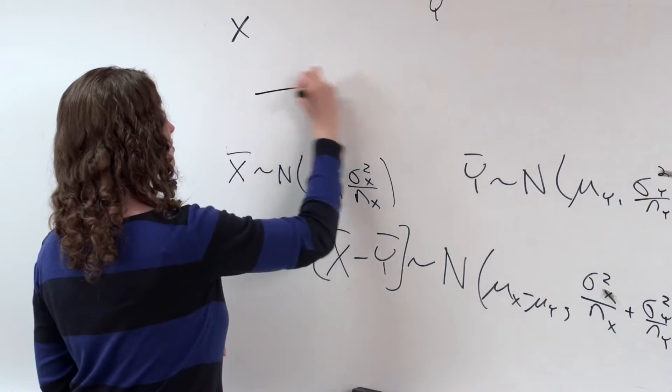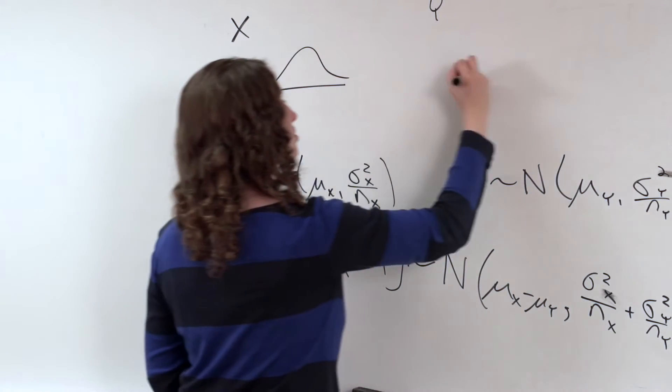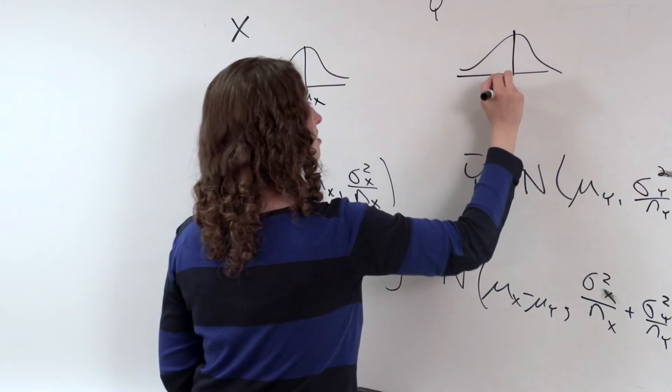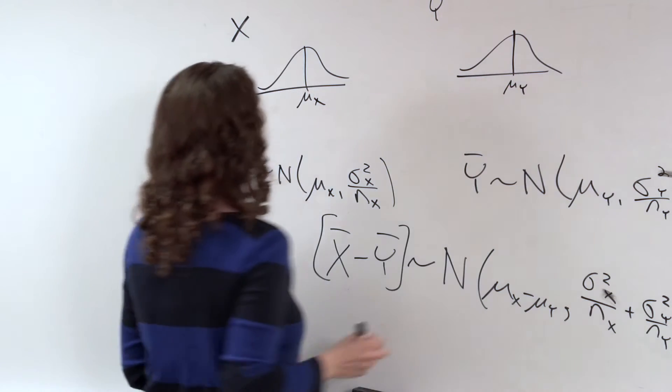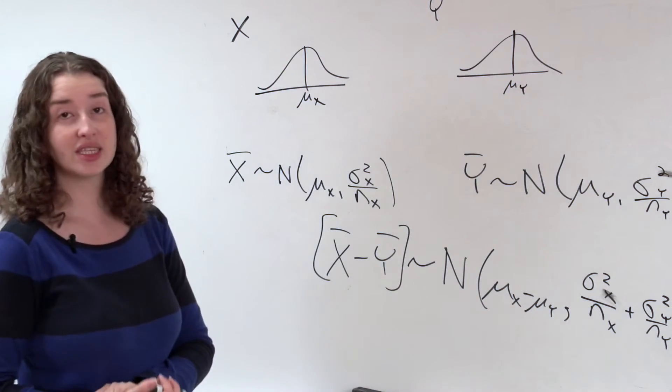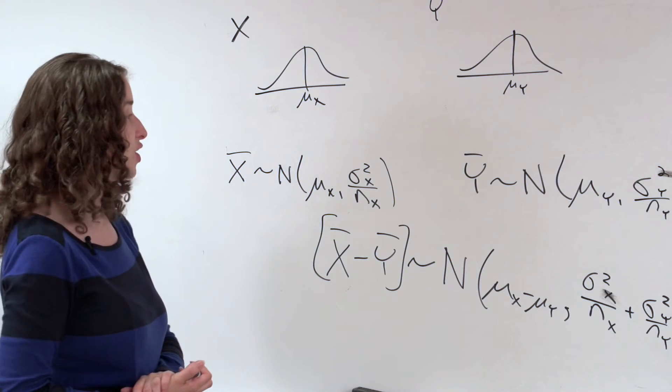So now we have to assume that X follows a normal distribution, and Y follows a normal distribution. And each of those distributions is centered at some value, mu_x or mu_y. And of course, each of these distributions does have some variance, I just am not claiming anymore that I know what it is.